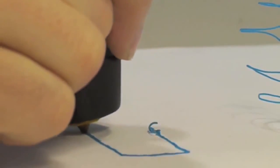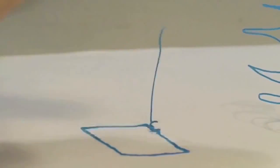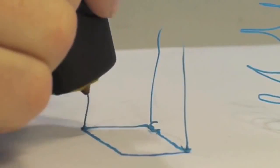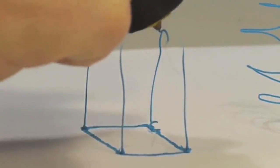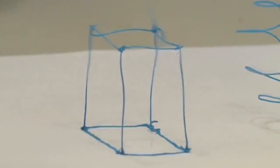The 3Doodler is the world's first and only 3D drawing pen. It's been designed to be compact and easy to use. No software, no computers. You just plug it in and can start drawing anything within minutes.